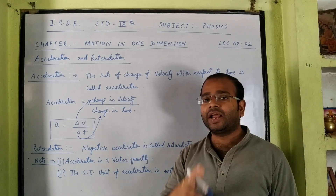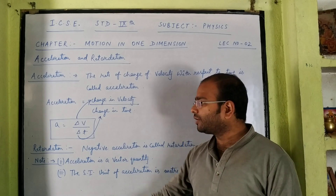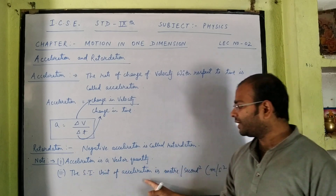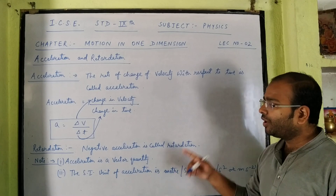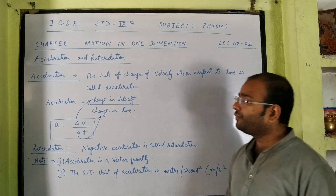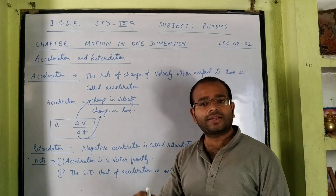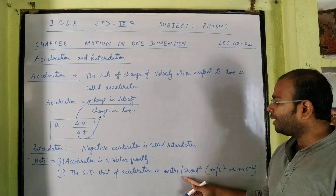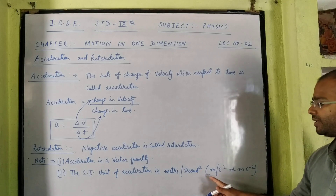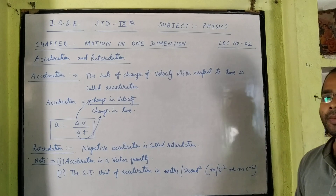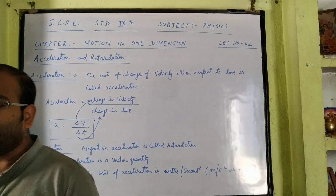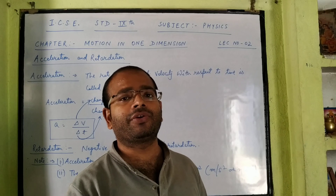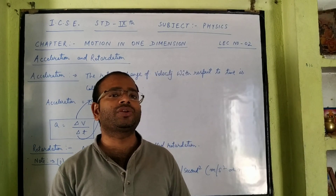From the definition we can draw two important points about acceleration. First, acceleration is a vector quantity. Second, the SI unit of acceleration is meter per second square, because we divide velocity by time — the SI unit of velocity is meter per second, and when divided again by time it gives meter per second square, or meter second to the power minus two.